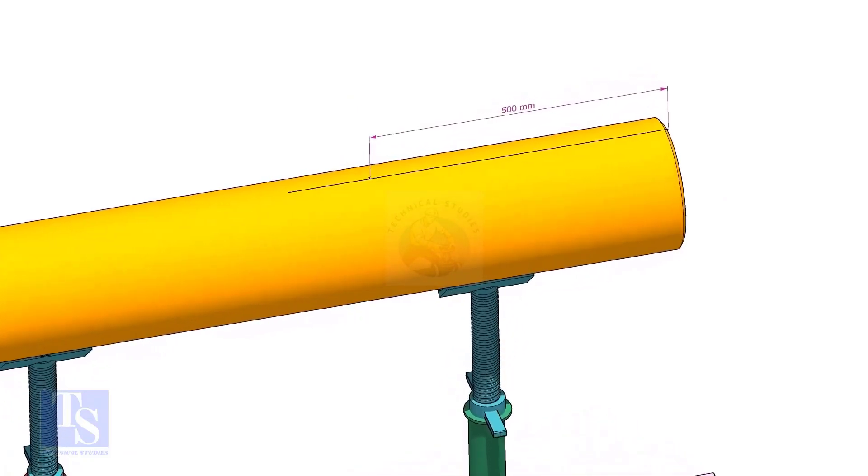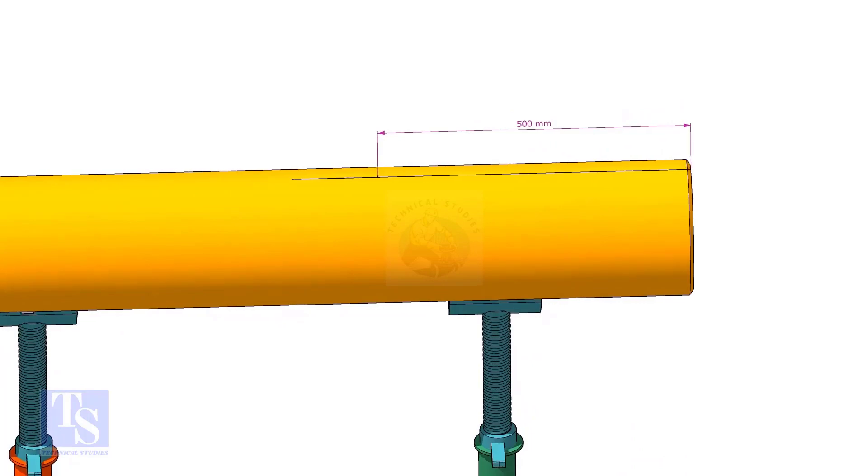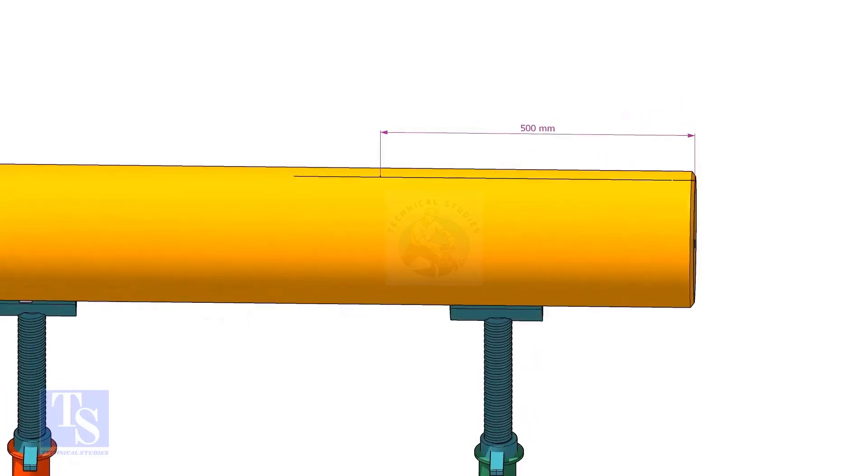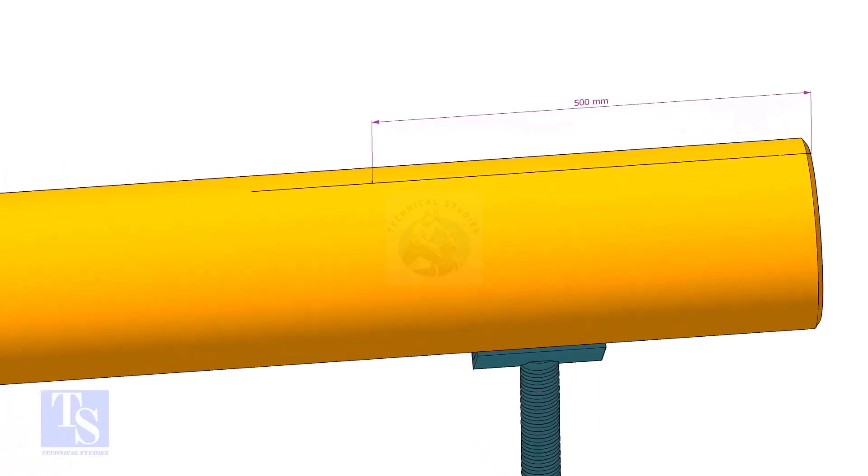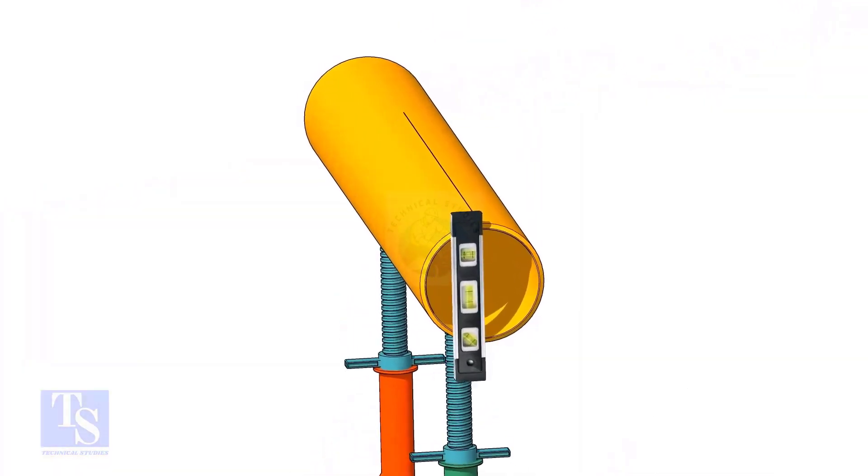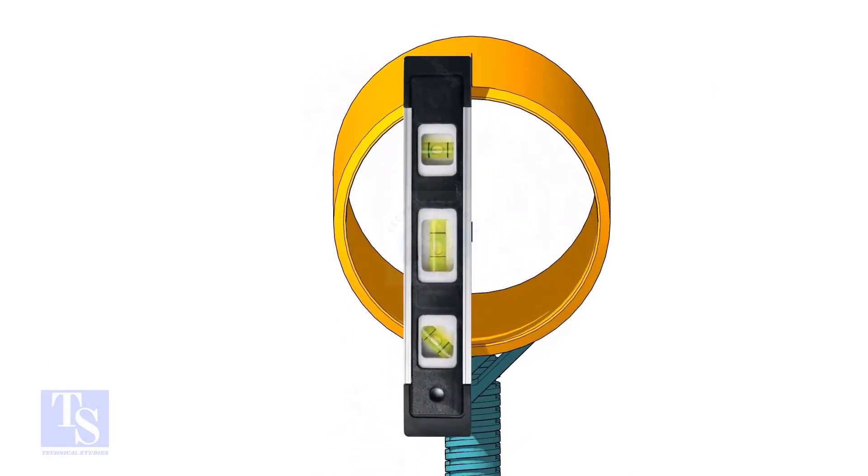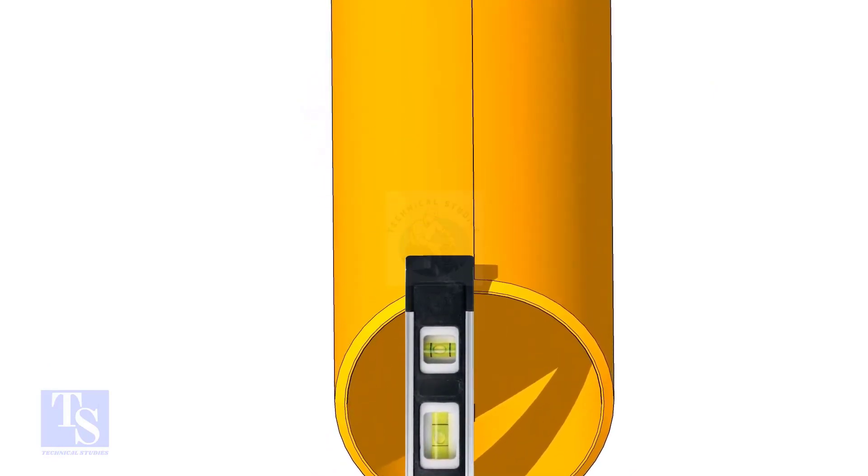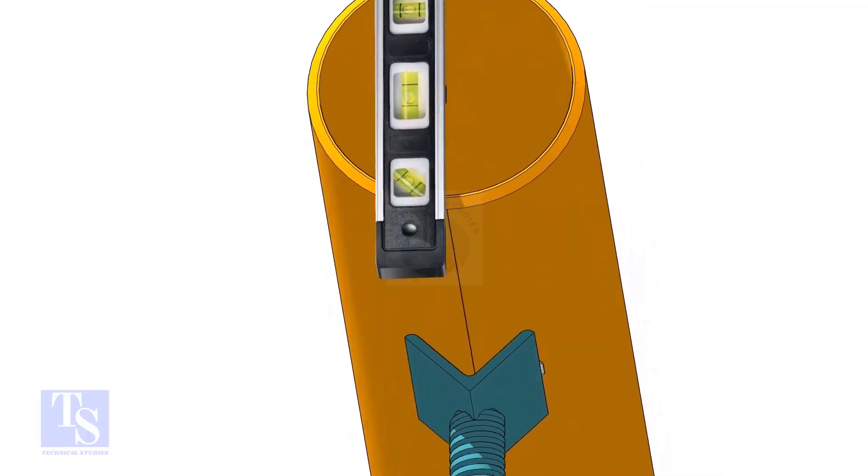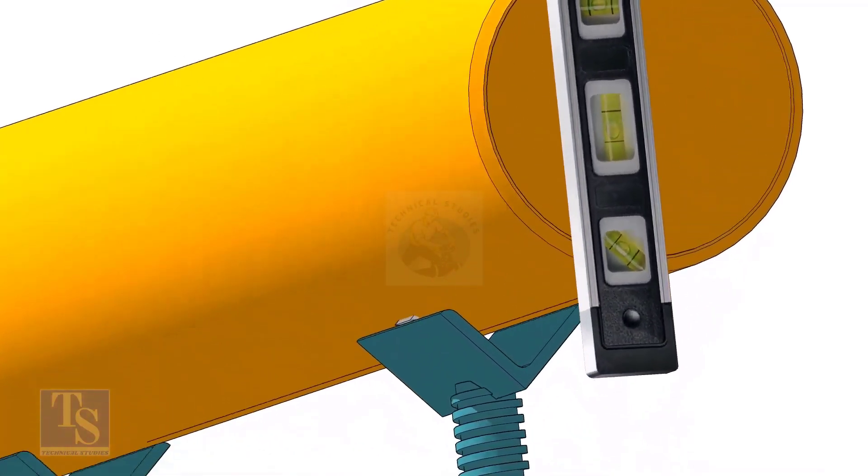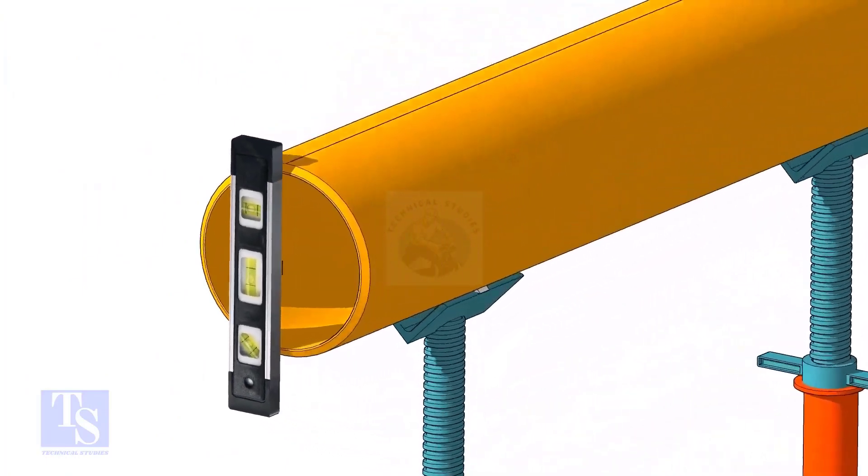Mark the center of the branch connection. Level the pipe horizontally and vertically as shown. After leveling, arrest the pipe to stop it from rotating.